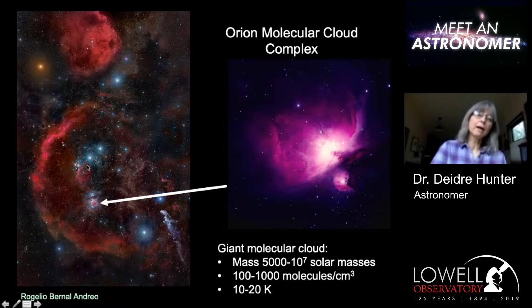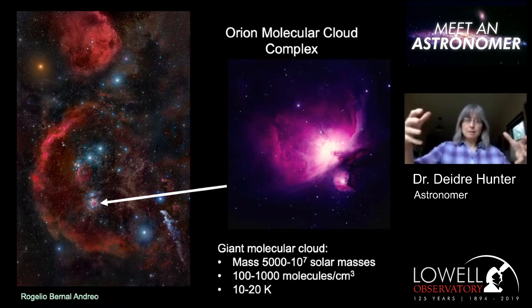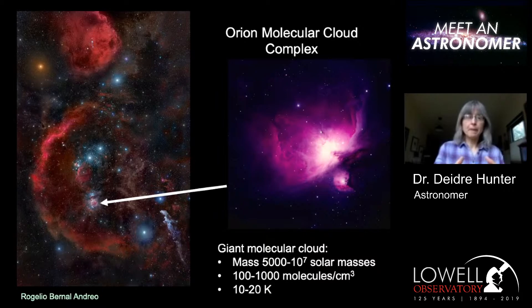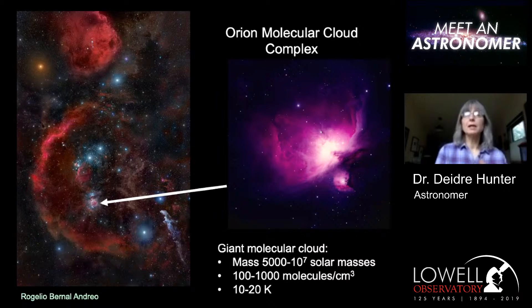These four stars are the stars we recognize as the body of the Orion constellation — this is his belt, and this is his sword. In this complex there are actually two molecular clouds. Most of the gas in the interstellar medium is hydrogen atoms. Once a cloud forms, it begins to be pulled together by the force of gravity of its own mass, and it gets denser and cooler. Densities can be up to 1,000 molecules per cubic centimeter, and the temperature drops to 10 to 20 degrees Kelvin. In the process, the hydrogen atoms become hydrogen molecules, so most of the gas in the cloud is molecular — that's why they're called molecular clouds.